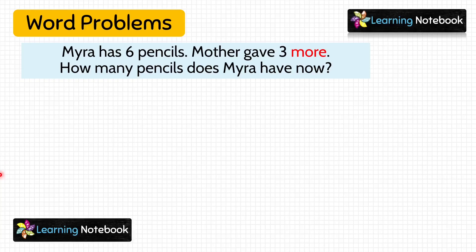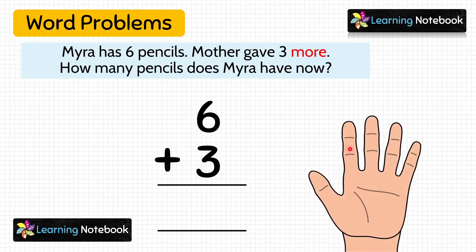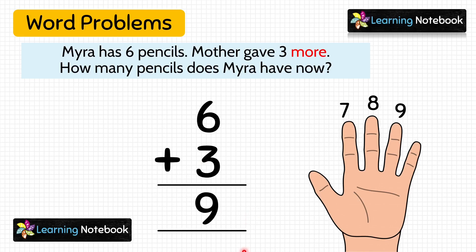Now students, let's solve this word problem with the second method. In the second method, we will add these numbers of pencils vertically. Let's write them in column form as shown here. Which is the bigger number? Yes, 6 is the bigger number. So keep 6 in your mind and count 3 on fingers. After 6, count 3 fingers: 7, 8, 9. So 6 plus 3 equals 9. Myra has 9 pencils.